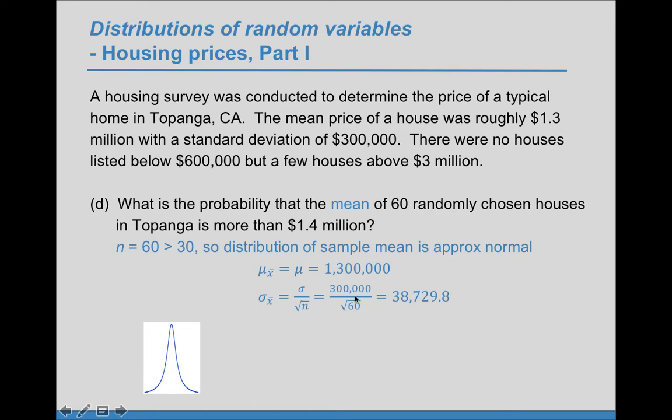Here we have the $300,000, which is the standard deviation of the population, divided by the square root of 60.